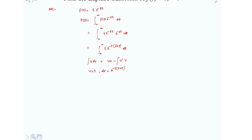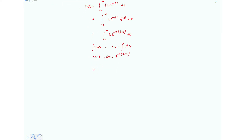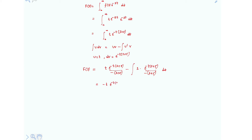Applying the integration by parts formula, the Laplace transform becomes: t · e^(-(s+5)t) / (-(s+5)), minus the integral term. Since u' = d/dt(t) = 1, the remaining term is e^(-(s+5)t) / (s+5), giving us: -t · e^(-(s+5)t) / (s+5) minus the next term.